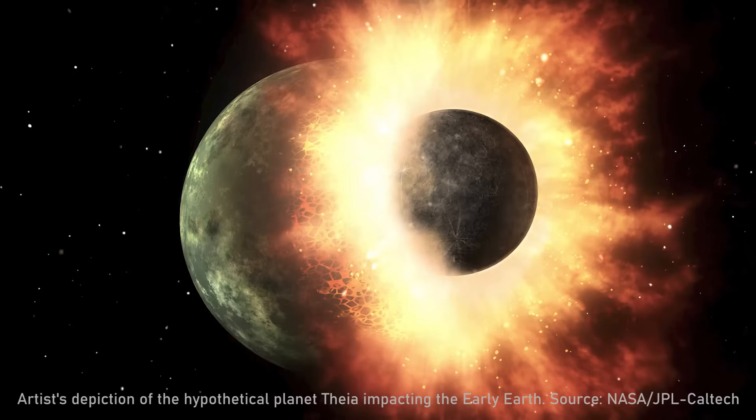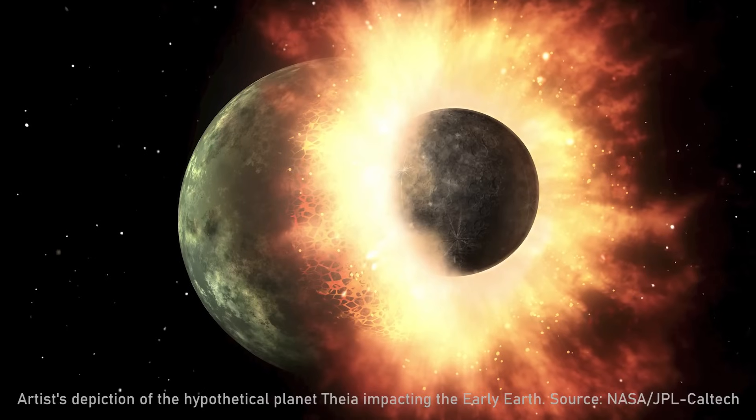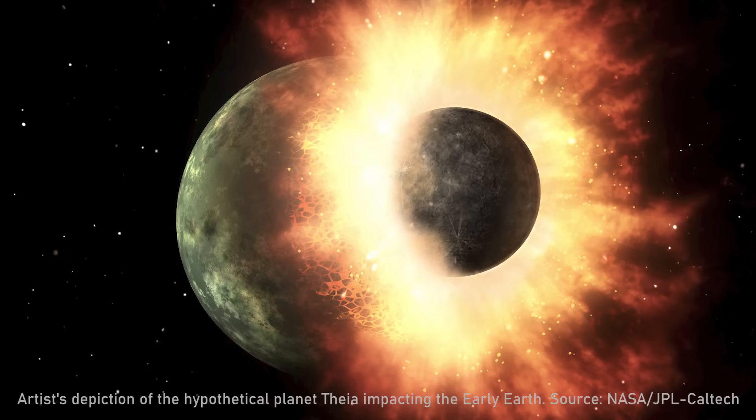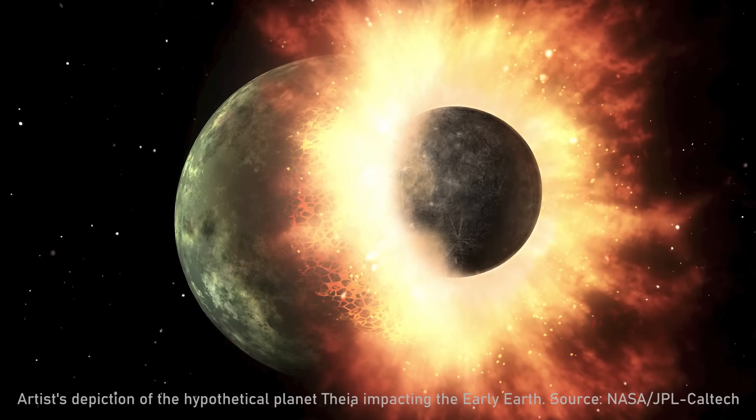The next step is those planetary embryos start slamming into each other to form planetary-sized bodies, and then the planetary bodies slam into each other. Earth's moon came about because there was a Mars-sized body that slammed into the Earth and essentially blew off material that eventually formed the moon. All of them have different chemical compositions and different temperatures.